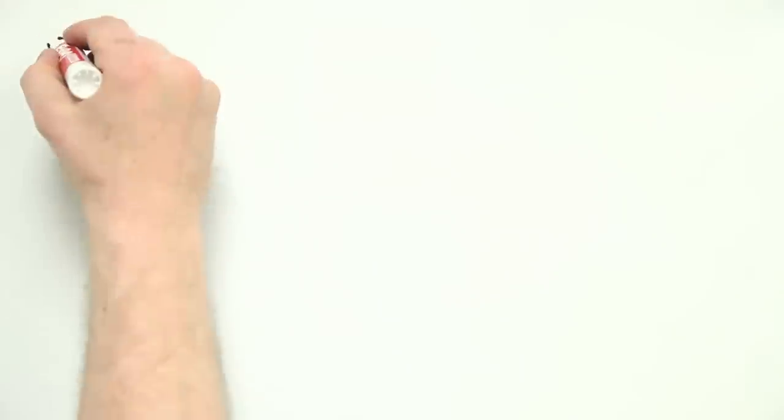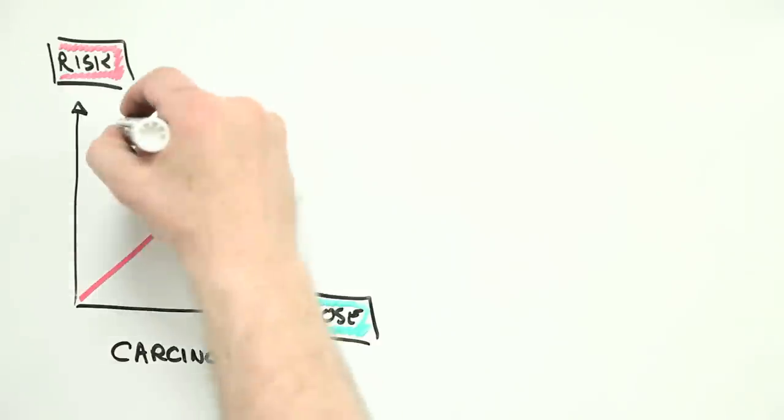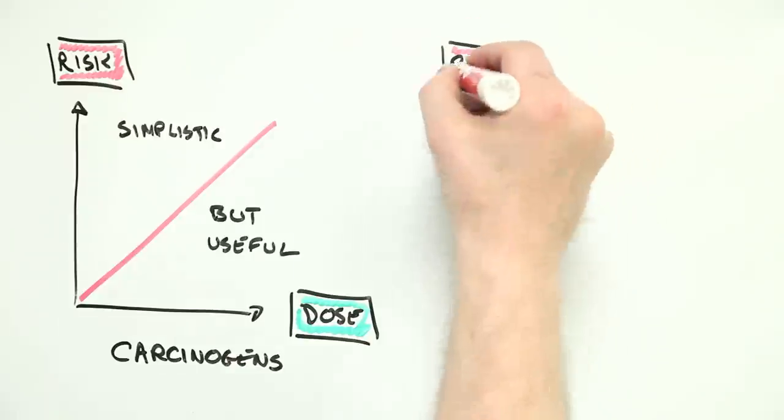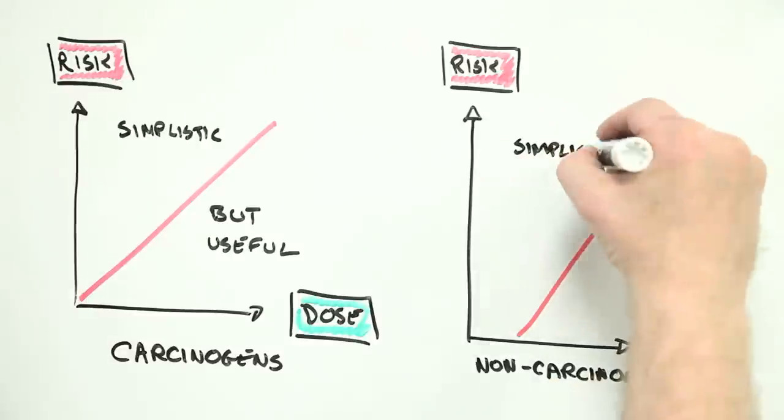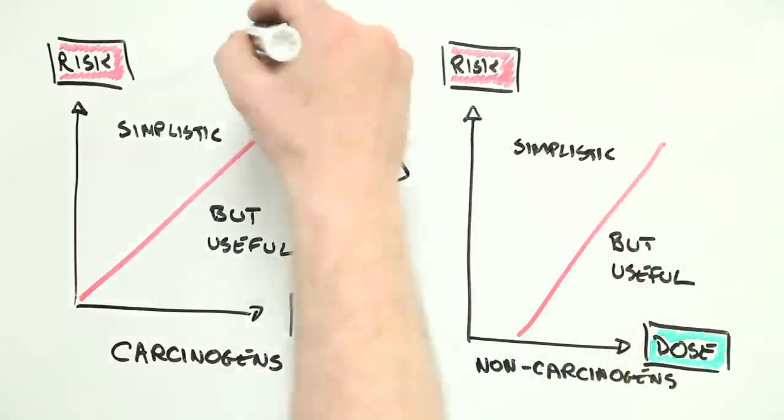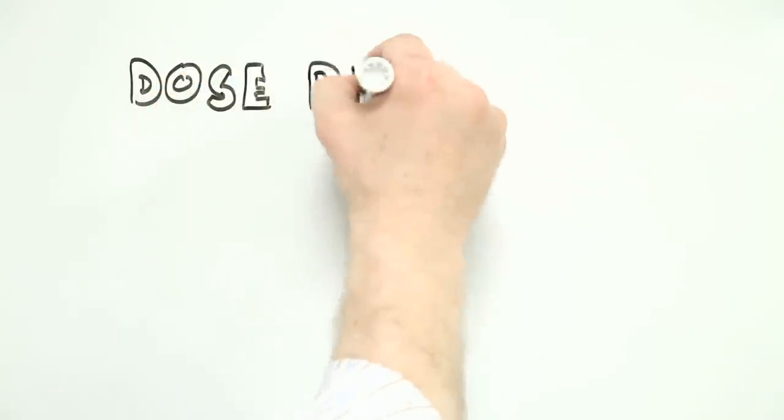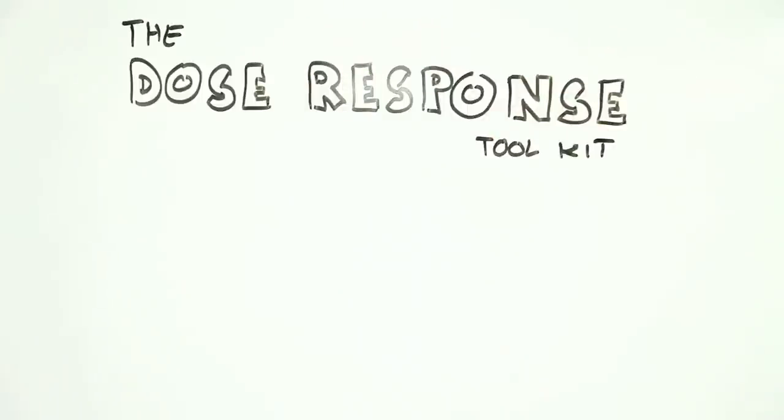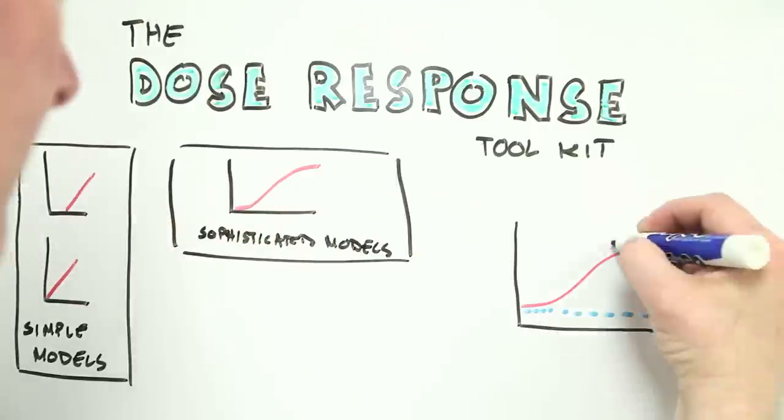We now know that DNA damage and repair are more complex than previously thought, and so the no threshold model is over-simplistic. We also know that people respond to non-carcinogens in complex ways, and so the threshold model is also over-simplistic. But each model still provides risk assessment experts with valuable insight into the harm that exposure to a substance might cause. And they provide a powerful starting point for thinking about the relationship between dose and response, and what this means for understanding and managing risk.